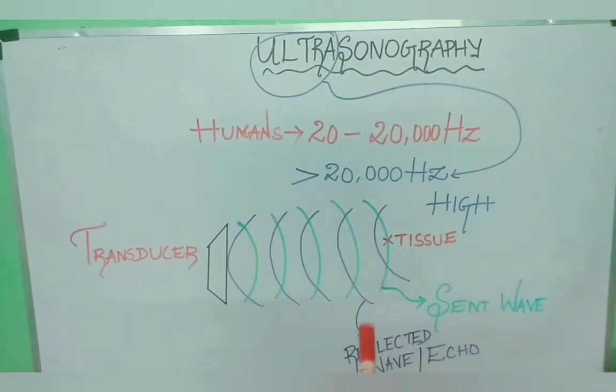Hearing range for humans is about 20 to 20,000 hertz. More than 20,000 hertz is used in ultrasound imaging.